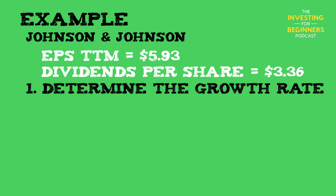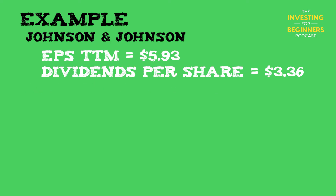The first step is to determine the growth rate. There are many different formulas out there, but in the interest of keeping this as conservative as possible, we are going to use the nominal growth rate of the GDP of the U.S. As stated earlier, you can't have a company growing faster than the U.S. economy or the formula won't work — if the growth rate is larger than the cost of equity, you will get a negative number. Therefore, we use the nominal growth rate of the economy, which is a pretty conservative number. Remember, this formula is extremely sensitive to its inputs. Currently, the nominal growth rate of the GDP is 4.33%.